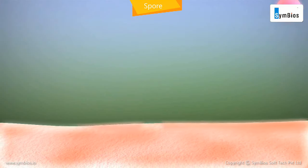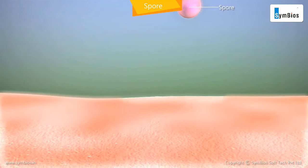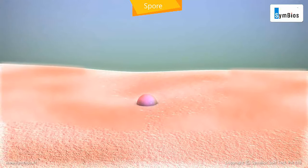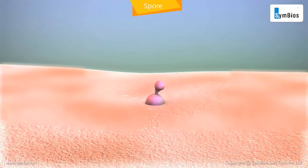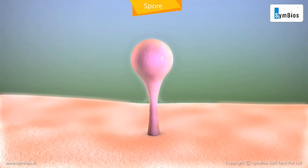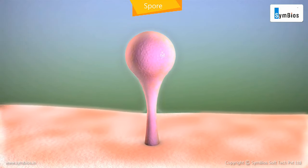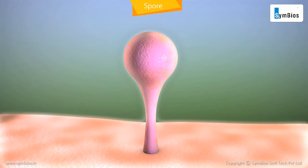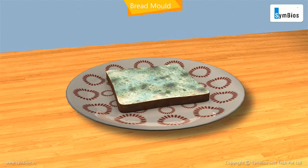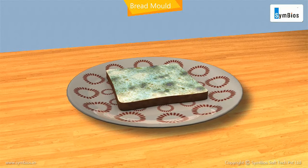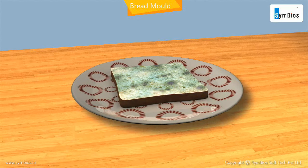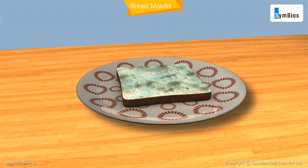A spore is a tiny spherical unicellular body covered with a thick wall. It grows into a new plant when conditions are favorable. Bread mold, which can often be seen growing on moist stale bread, grows when spores settle on the bread.